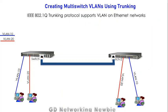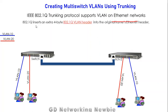We are going to discuss the 802.1Q trunking protocol. This protocol supports VLANs on Ethernet networks by adding an extra 4-byte header. When a switch generates a frame that needs to be sent to another switch, as part of this trunking protocol it adds that extra 4-byte header to the frame.